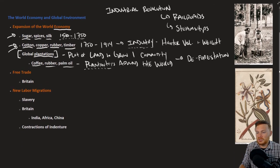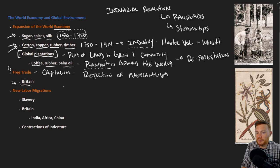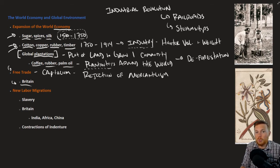One big difference from the period preceding the age of imperialism is the emphasis on free trade and capitalism. This is a rejection of mercantilist policies. Mercantilism said that colonies should only trade with the mother country, whereas free trade, embraced by Britain and others, meant that colonies could freely trade with anyone. Government policies were thus encouraging more trade than in centuries earlier.